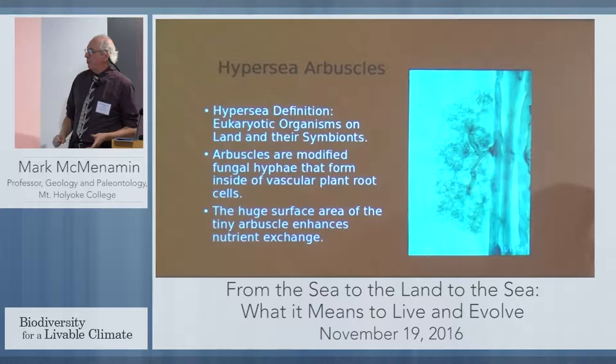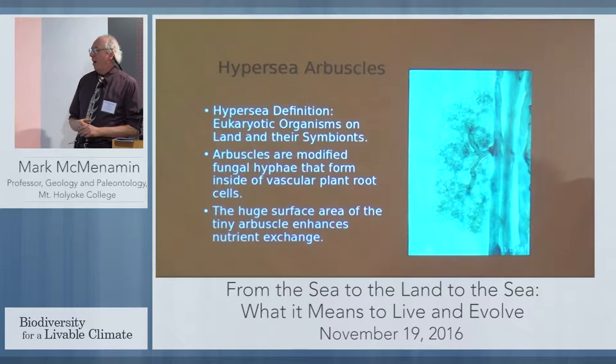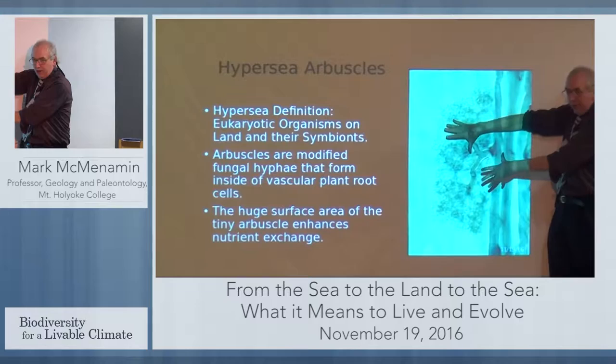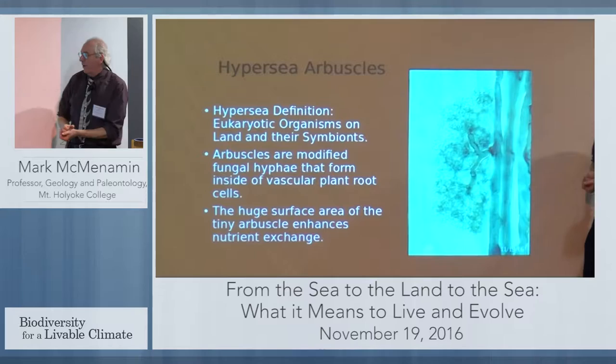Part of the reason for this is because of this structure known as the Arbuscle. The Arbuscle is a modified fungal hypha that comes from a soil fungus and then goes into the root cells of a vascular plant and then branches and branches and branches inside of it. It develops an enormous surface area even though it's microscopic, and this huge surface area of the tiny Arbuscle enhances nutrient exchange.